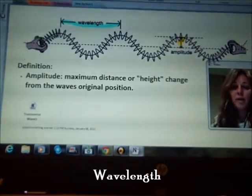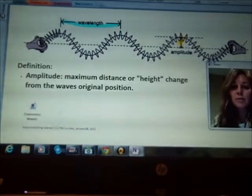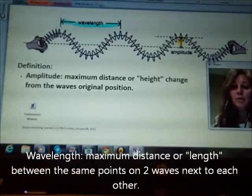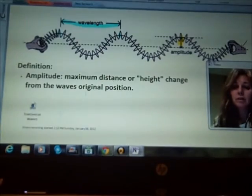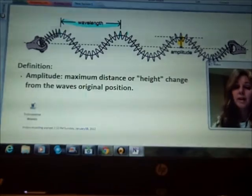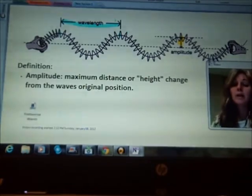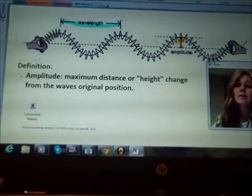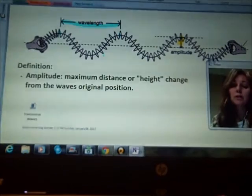And the wavelength is actually from the same point of one, so the same point right here, wave to the same point on the next wave right here. That is called a wavelength, and as you can see it's really the length, the maximum length, between the same two points on a wave.